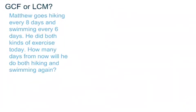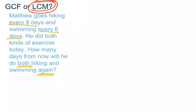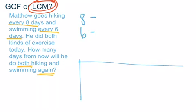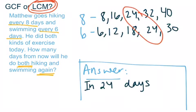Our last example: Matthew goes hiking every eight days and swimming every six days. He did both kinds of exercise today. How many days from now will he do both hiking and swimming again? Look for keywords and check your T-chart to decide GCF or LCM. If you picked LCM, you're correct — because we see 'every six days' and 'every eight days,' plus the word 'again.' Using the numbers 8 and 6, listing multiples and finding the LCM, your answer should be 24 days from now he will do both hiking and swimming again.